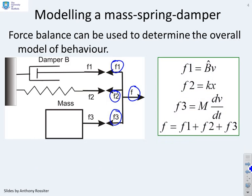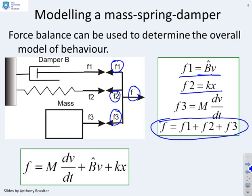If you write down equations for f1, f2 and f3, you'll see that f1 is given by b hat times the velocity, f2 is given by the spring constant times the extension or x, and f3 is mass times acceleration or m dv/dt. Our basic modeling says that F equals f1 plus f2 plus f3. So I can put all those equations together and it ends up with my nominal model for a mass spring damper which is this one here. The force is mass times dv/dt plus b hat times v plus k times x.